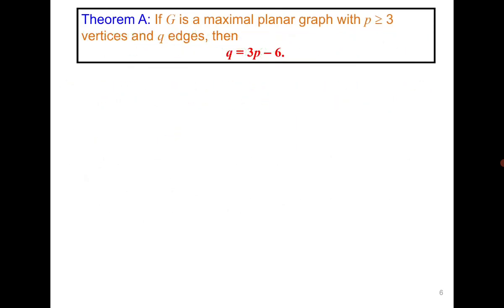The next important result: if G is a maximal planar graph, then the number of edges is always 3p minus 6. Think about how to prove this. Since all faces are triangular, consider K4 as a simple example. The number of edges equals 3 times r, because each region has exactly 3 edges.